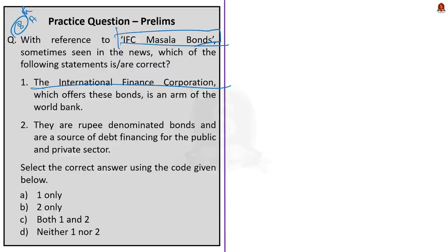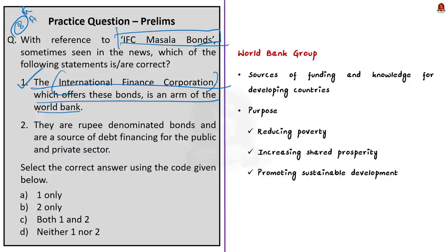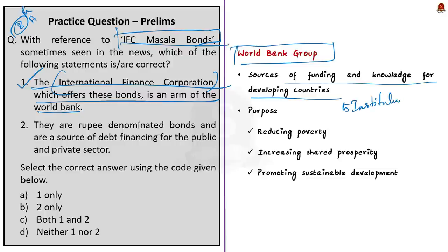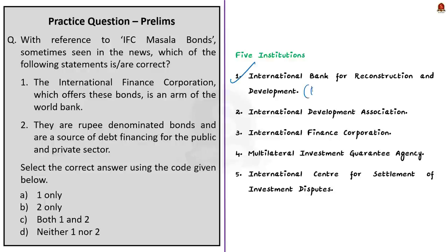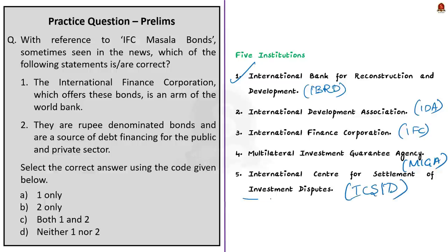This is the 8th question in Set A of the 2016 preliminary paper, about IFC masala bonds. Statement 1 says that IFC — International Finance Corporation — which offers IFC masala bonds, is an arm of the World Bank. This statement is correct. The World Bank Group consists of five institutions: IBRD (International Bank for Reconstruction and Development), IDA (International Development Association), IFC (International Finance Corporation), MIGA (Multilateral Investment Guarantee Agency), and ICSID (International Centre for Settlement of Investment Disputes). So statement 1 is correct.